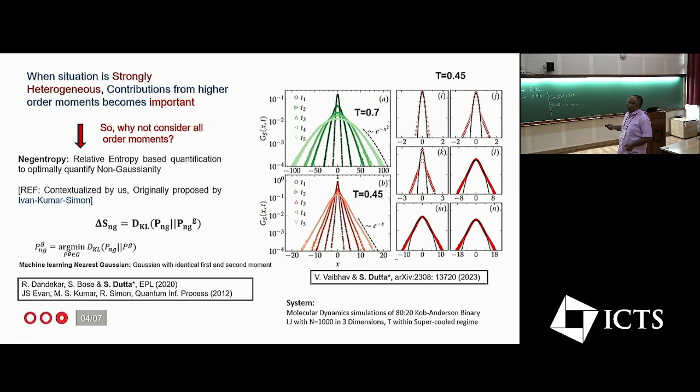For example, this is at high temperature dynamics. When they are, they are Gaussian, they are intermittently Gaussian. There are some non-Gaussianity in between and at high temperature, at long times, they are Gaussian. Whereas at low temperature, this is non-Gaussian for very long times.